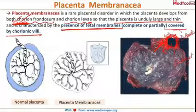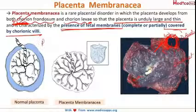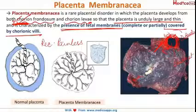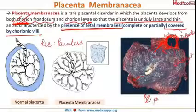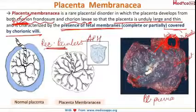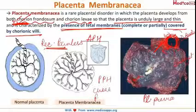This is the large placenta seen in placenta membranacea. The characteristic clinical manifestation is recurrent painless vaginal bleeding during pregnancy. Since this placenta is very large, there may be encroachment of some parts into the lower segment, resulting in placenta previa and APH. Due to imperfect separation of the placenta it may also lead to PPH. There are increased risks of chorioamnionitis and fetal growth restriction.